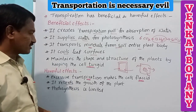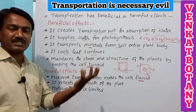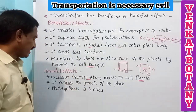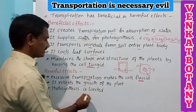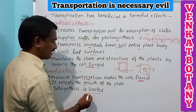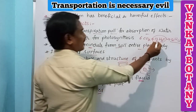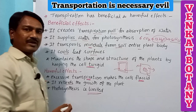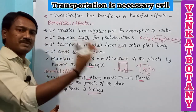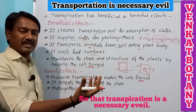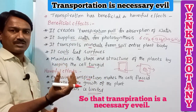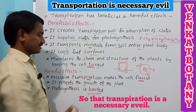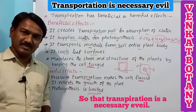Excessive transpiration retards the growth of the plant body and also limits photosynthesis, because when there are only a small number of water molecules remaining after transpiration, photosynthesis is limited.